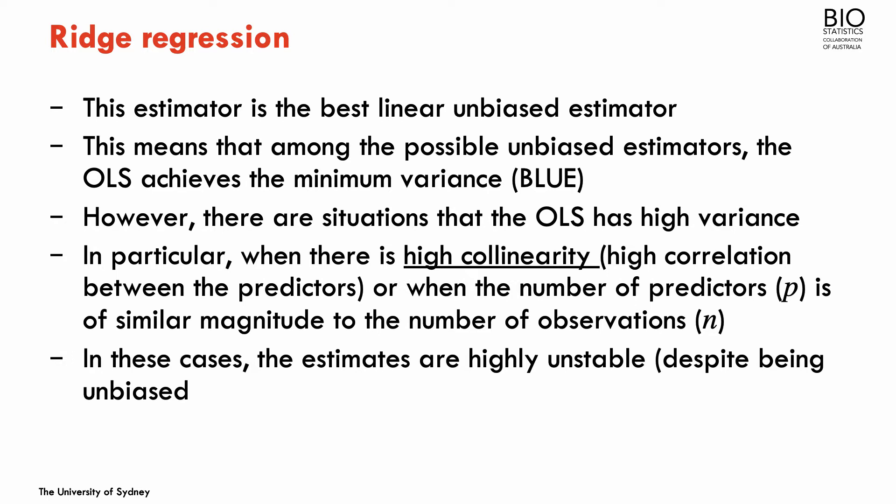Sometimes, despite being the best linear unbiased estimator, the OLS estimator has high variance. This happens when we have high collinearity between the predictors — meaning high correlation among them — or when the number of predictors P is of similar magnitude to the number of observations. The OLS is still unbiased but becomes highly unstable, giving high variance and high standard errors, making it very hard to trust those estimators.